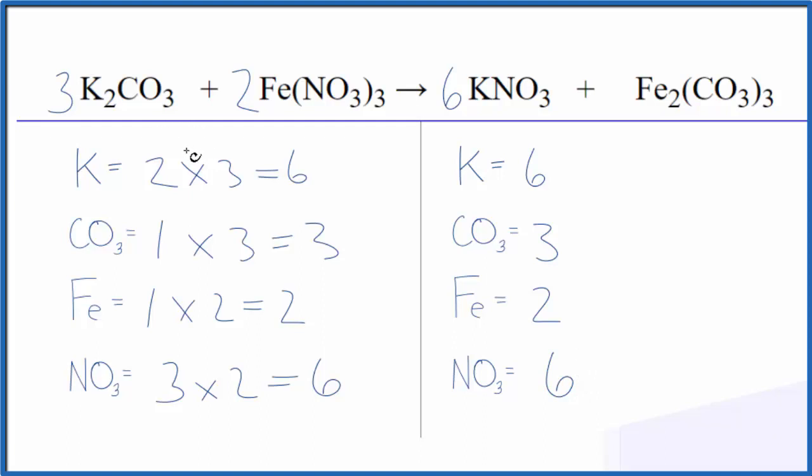So you can see the utility here when we have these polyatomic ions like the carbonate that stay together. If we count them as one thing, the balancing is much easier. Either way, you get the same answer. This is just quicker and less prone to error.